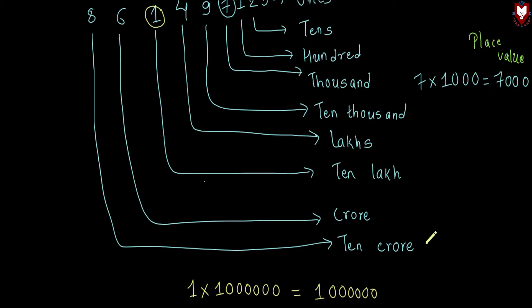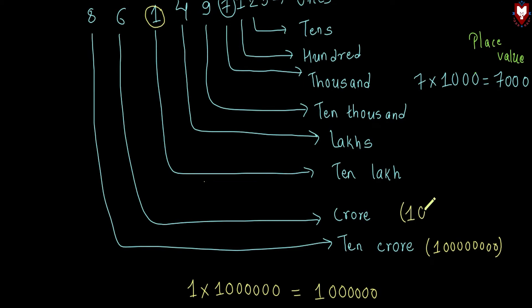So what is the number of 10 crores? We count: 8 crores has 7 zeros, giving us 7 crores.